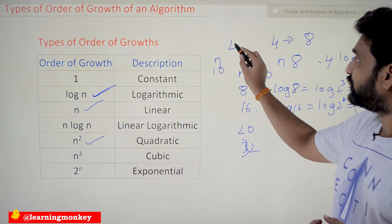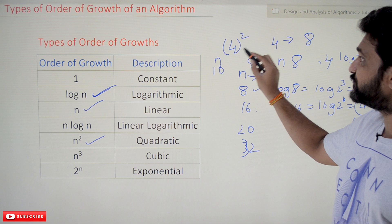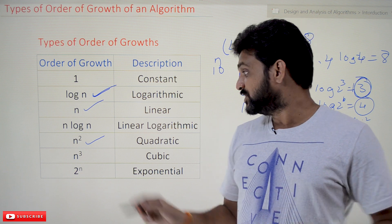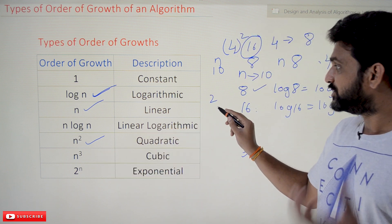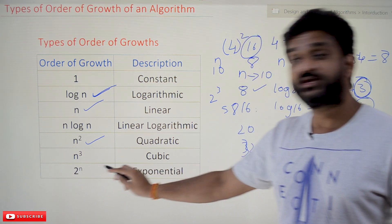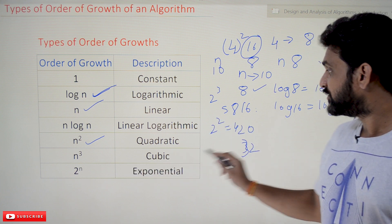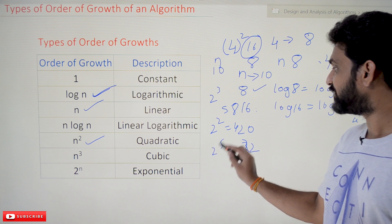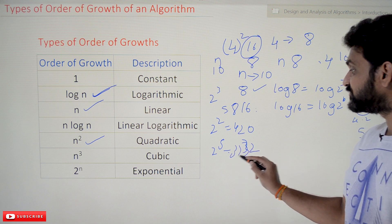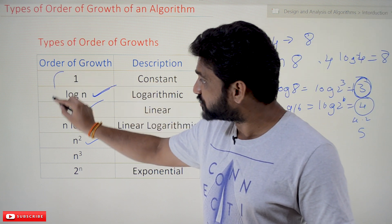The next one is quadratic growth — n squared. For example, if you give 4 inputs, it is going to be 4 squared, which is 4 into 4 = 16 steps executed. Next is cubic — n cubed. For 2 inputs: 2 cubed = 8 steps. And the next one is exponential — for example 2 to the power n. If you give 2 inputs: 2 squared = 4 steps; if you give 5 inputs: 2 to the power 5 = 32 steps will get executed.